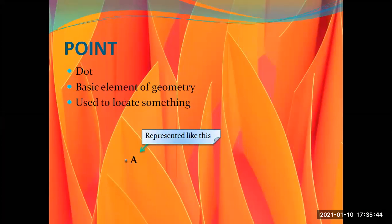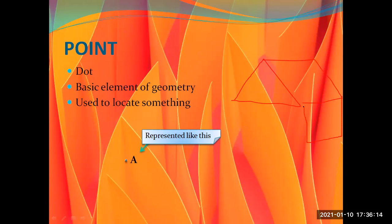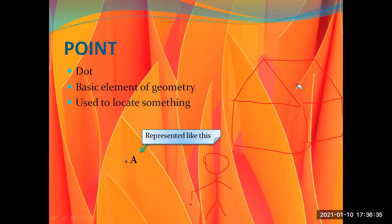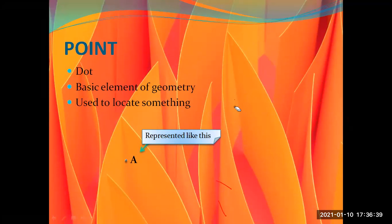The first thing we are going to discuss is a point. What is a point? A point is a dot and it is the basic element of geometry. So if you want to draw something, you keep the pencil here and make something like this to make a house. You are taking a pencil and keeping a point. So the point that you made was the basic thing for the construction of your house.